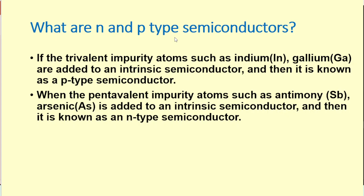What are N and P type semiconductors? If we dope any semiconductor with trivalent impurities like indium or gallium, then it is known as P type semiconductor. When it is doped by some pentavalent impurities such as antimony Sb or arsenic As, then it is known as N type semiconductor. In P type semiconductor, the majority carriers are holes, whereas in N type semiconductor, the majority carriers are electrons.